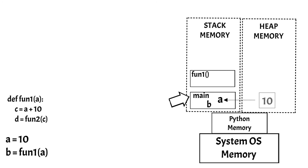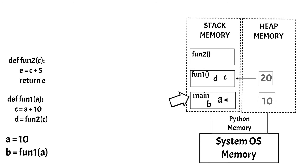Since we are adding A with 10 inside function1, a new reference object will be created in the function1 stack with the name C, and a new value will be created in the heap memory which will have the value of integer object 20. In the next line, function2 is invoked which accepts variable C as an argument, which is referenced to variable D — due to which the state of variable D will be maintained in the function1 stack, and a new stack will be created for function2.